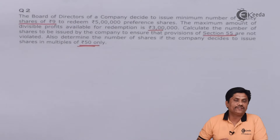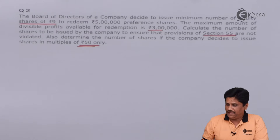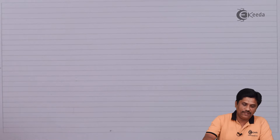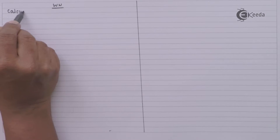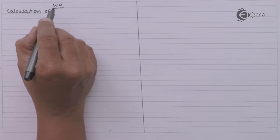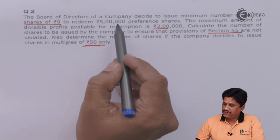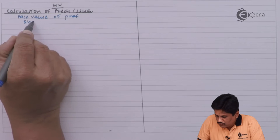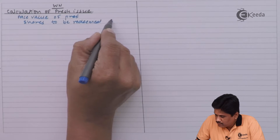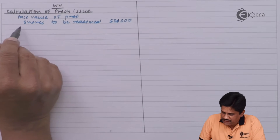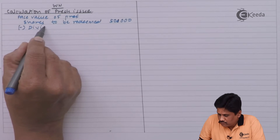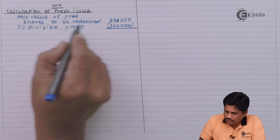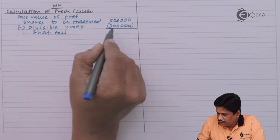This is a simple but very concept-based question. We need to decide how many shares of rupees nine face value are to be issued. We have to check what is the face value of preferences to be redeemed and accordingly decide how much replacement is required. Face value of preferences to be redeemed is five lakhs. Available divisible profit is three lakhs. Therefore, the shortfall is rupees two lakhs.